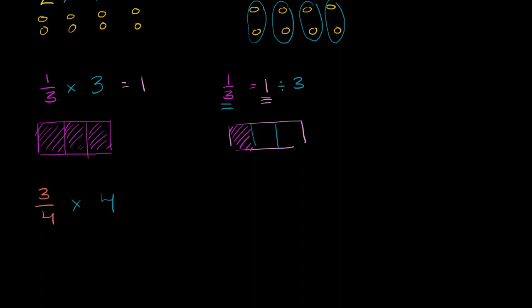Let's try 3 fourths and multiply it by 4. So once again, let's see if I could draw a fourth here. Let me do this in a new color. So I'll take, let's say that this block right over here is a whole. I'm going to divide it into 4 equal sections.